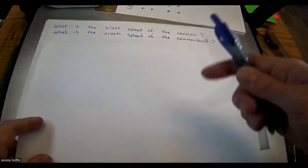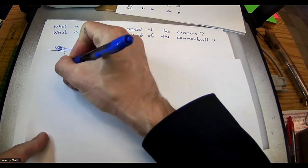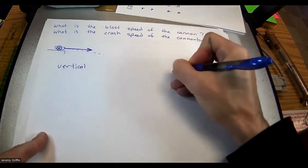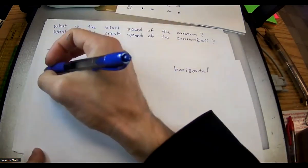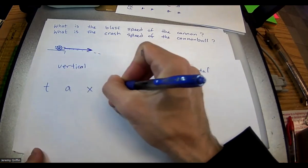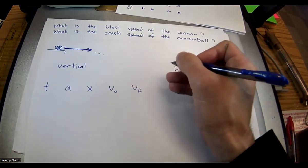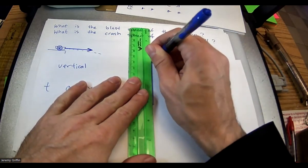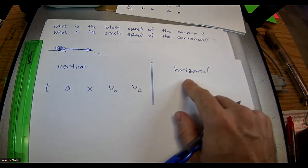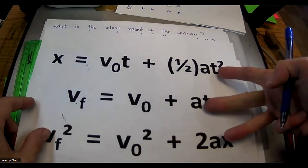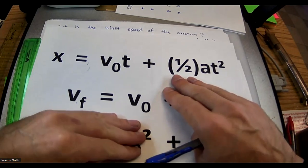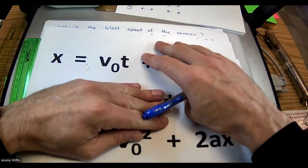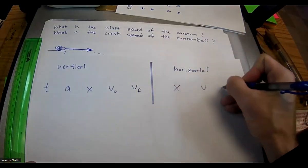Here's a framework to solve these types of problems. We're going to do vertical motion versus horizontal motion. In the vertical direction we've got our classic variables: time, acceleration, displacement, initial velocity, final velocity. In the horizontal direction, if there's no acceleration horizontally — acceleration equals zero — the equations simplify. The top equation just turns into x equals vt. So those are the only three variables we really care about horizontally: x, v, and t.